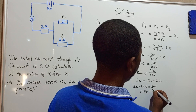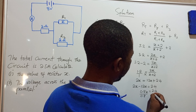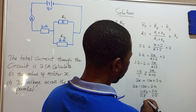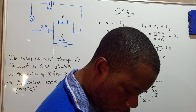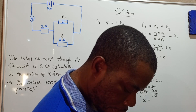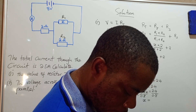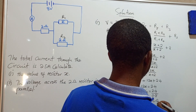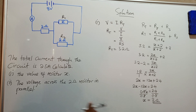We are looking for X, so divide both sides by 0.8. 2.4 divided by 0.8 gives us 3. So X equals 3 ohms. That is our answer for part one — the value of resistor X is 3 ohms.